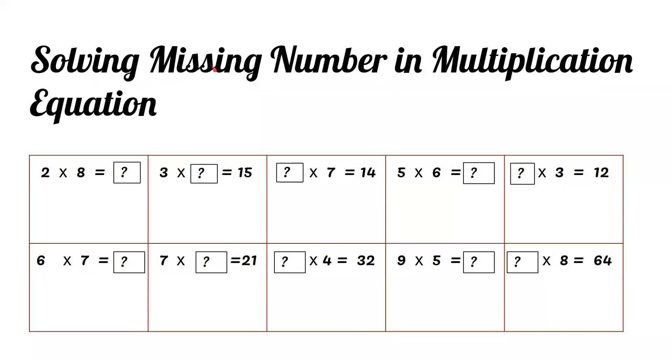Solving missing number in multiplication equation. 2 times 8 equals what? 8 ones are 8, 8 twos are 16, so the answer must be 16.